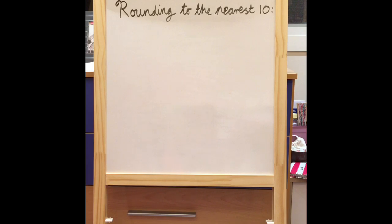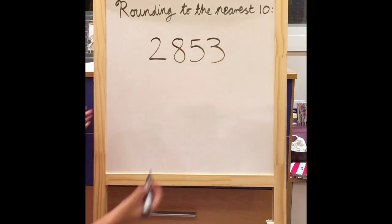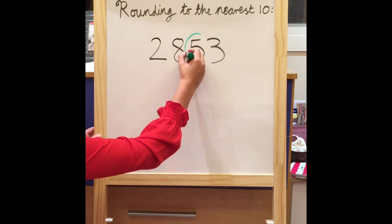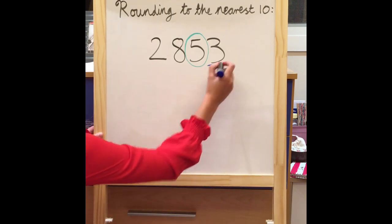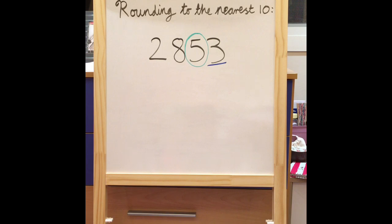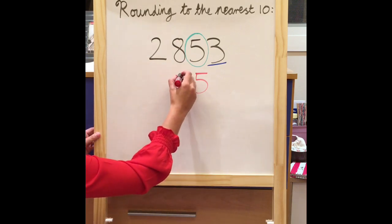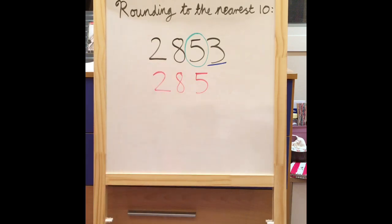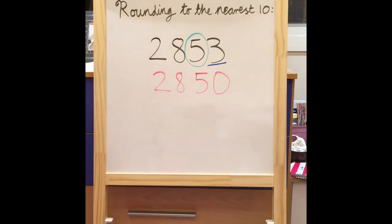Let's take a look at one more. If I was asked to round 2,853 to the nearest ten, I first need to circle my tens column. Circle your number, look next door — so the number I now need to look at is my three. Five or greater add one more: three is less than five so I don't need to add one more, I can just bring down my five as it is. Numbers on the left stay the same, so my hundreds and thousands columns stay the same. Numbers on the right, zero is your name — so my three is now zero. So 2,853 rounded to the nearest ten is 2,850.